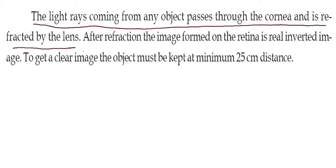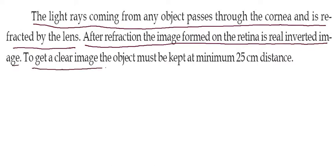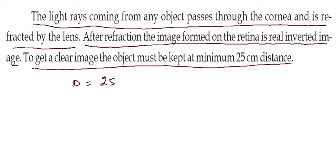Which lens? That is the Convex Lens. After refraction, the image formed on the Retina is a real, inverted image. To get a clear image, the object must be kept at 25 cm, which is the least distance of distinct vision.